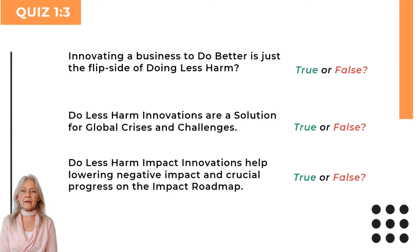Question: innovation and transforming a business to do better is just the flip side of doing less harm. False — do-better innovations focus on core activities and positive impact; do-less-harm innovation reduces negative impact. Question: do-less-harm innovations are a solution for global crises and challenges. True, for the short-term — lowering carbon emissions, virgin plastic, and less exclusion of people. For the long-term, we need more. Question: do-less-harm impact innovations help lowering negative impact and are crucial progress on the impact roadmap. True — growing a market or business without growing negative impact, decoupling, is an important step in fixing it. Investors favor it because it reduces the risks of negative impact, which leads to regulation, taxation, and divestment, which means higher capital costs.